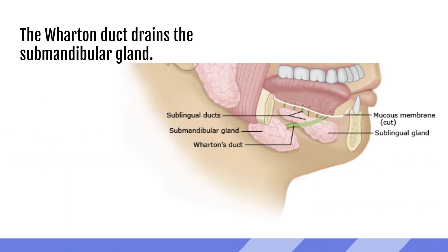Saliva produced by the submandibular gland is delivered via Wharton's duct, which enters the mouth from below. The sublingual gland has a bunch of small ducts that bring saliva into the mouth and also connect to Wharton's duct. The submandibular gland drains via Wharton's duct, which comes up underneath in the front floor of the mouth, and the sublingual gland has tiny ducts along its length, a few of which connect into Wharton's duct.